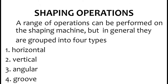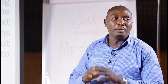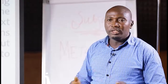A range of operations can be performed on the shaping machine. In general, the operations are grouped into four: the horizontal operation, the vertical operation, the angular operation, and the groove operation. These are the four basic operations that can be carried out on the shaping machine.